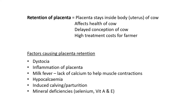Another complication is retention of the placenta. The placenta must come out of the cow's body, ideally within one hour. When the placenta stays inside the uterus it affects the cow's health and can cause infection — the retained organ can start to rot inside. If the placenta is retained for longer than it should be it can also cause delayed conception, meaning it will take longer for this cow to become pregnant again.